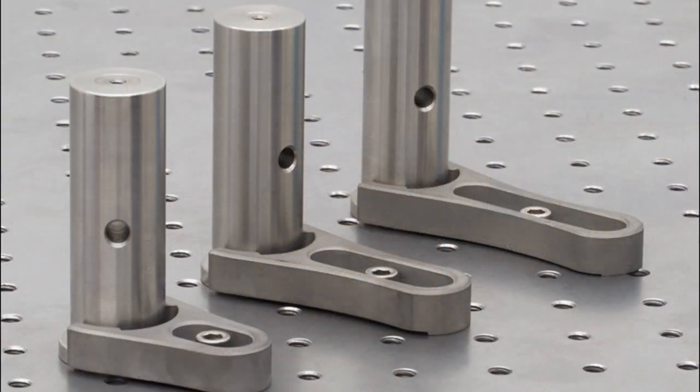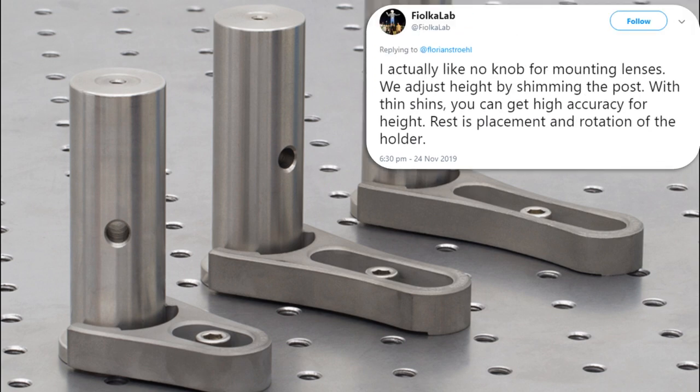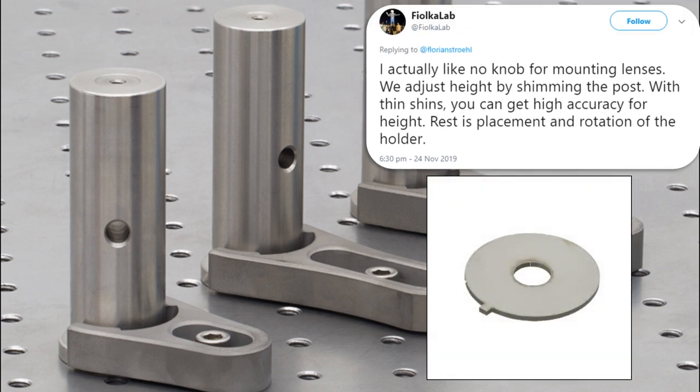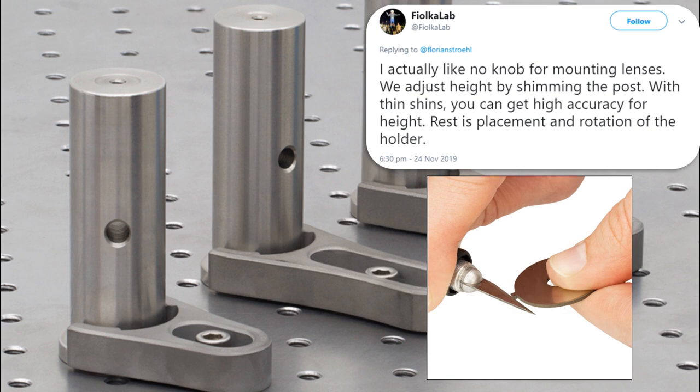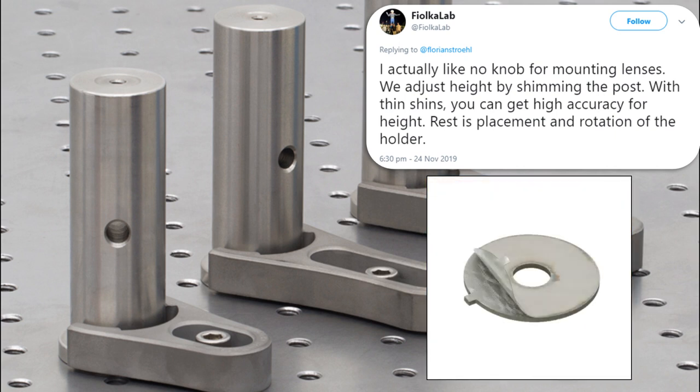You can push alignment stability even further and use only a simple post for horizontal and yaw adjustment. Vertical adjustment is done by shimming, adding very thin metal plates iteratively to your post. That might be slow, but once aligned, it's rock solid.